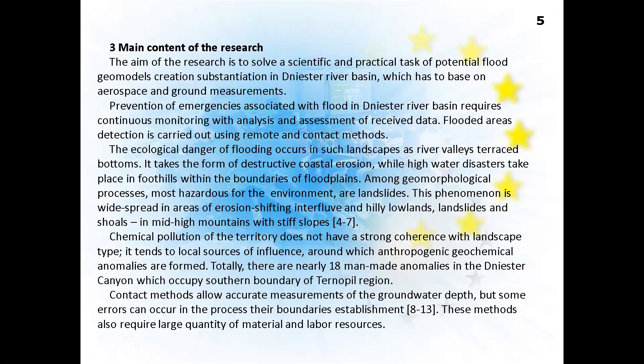Chemical pollution on the territory does not have a strong coherence with landscape type. It tends to local sources of influence around which anthropogenic geochemical anomalies are formed. There are nearly 18 man-made anomalies in the Dnistra Canyon, occupying a considerable portion of the Ternopil region. Contact methods allow accurate measurements of groundwater depth, but errors can occur in establishing their boundaries, and they require considerable material and labor resources.